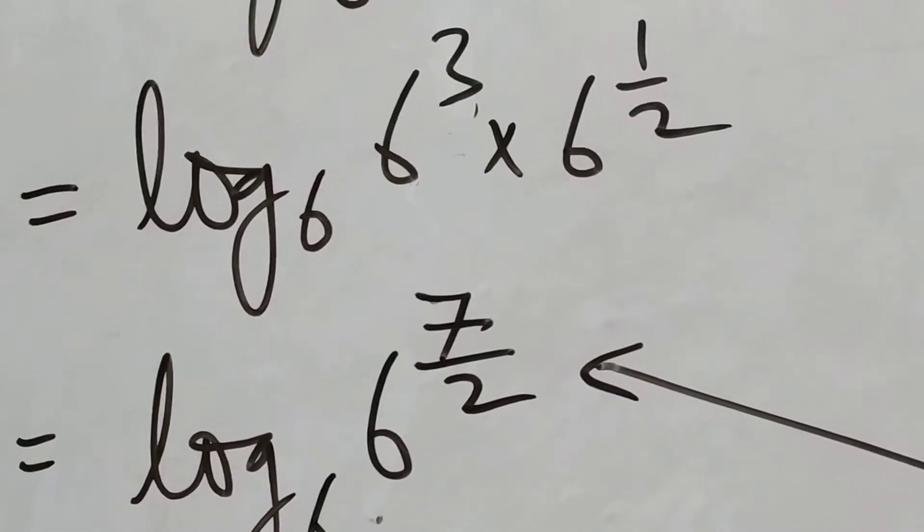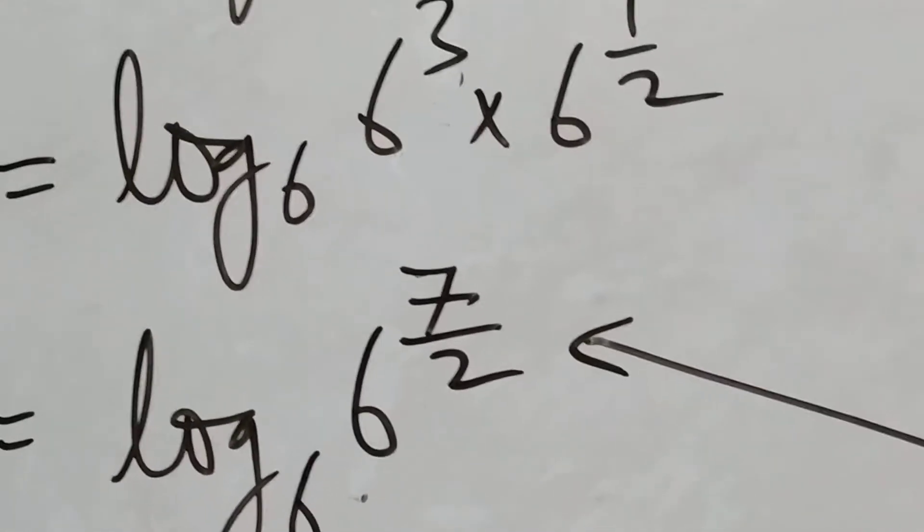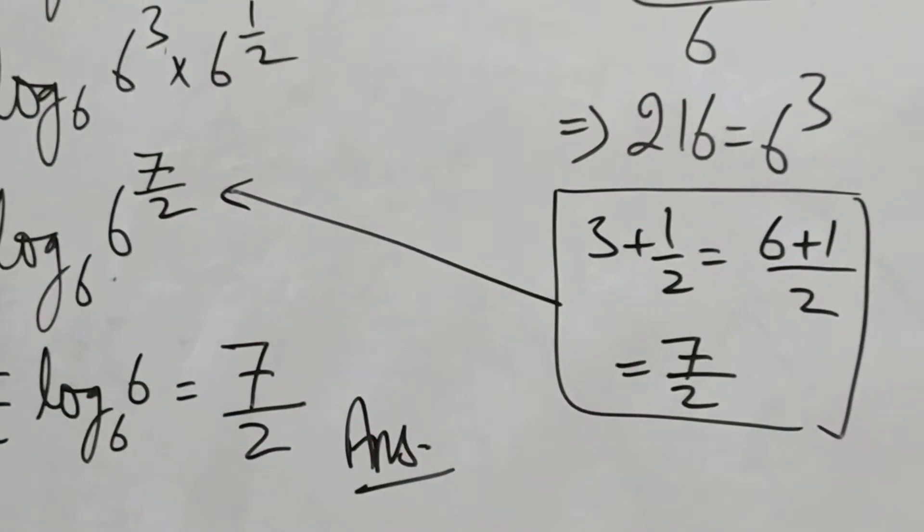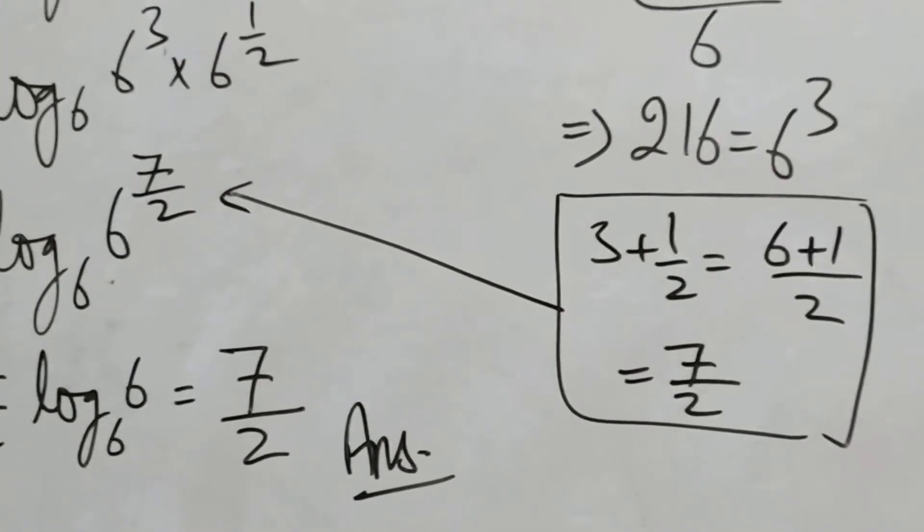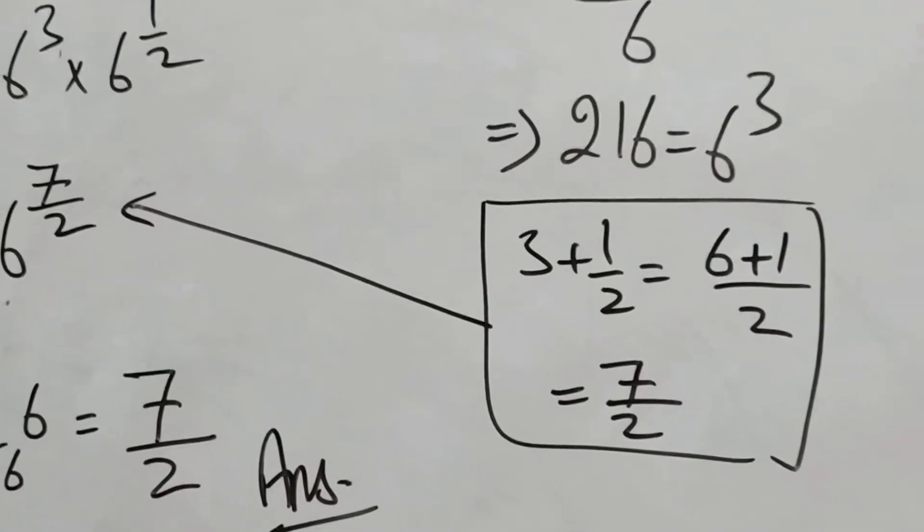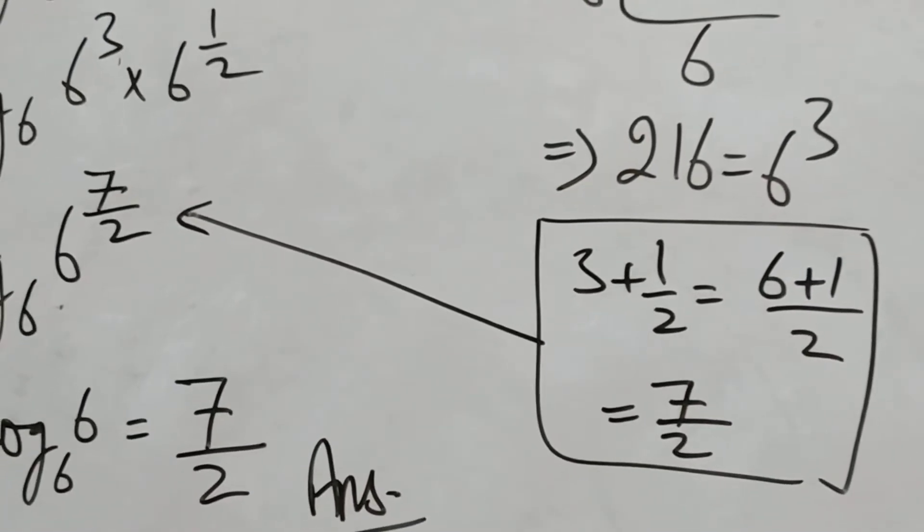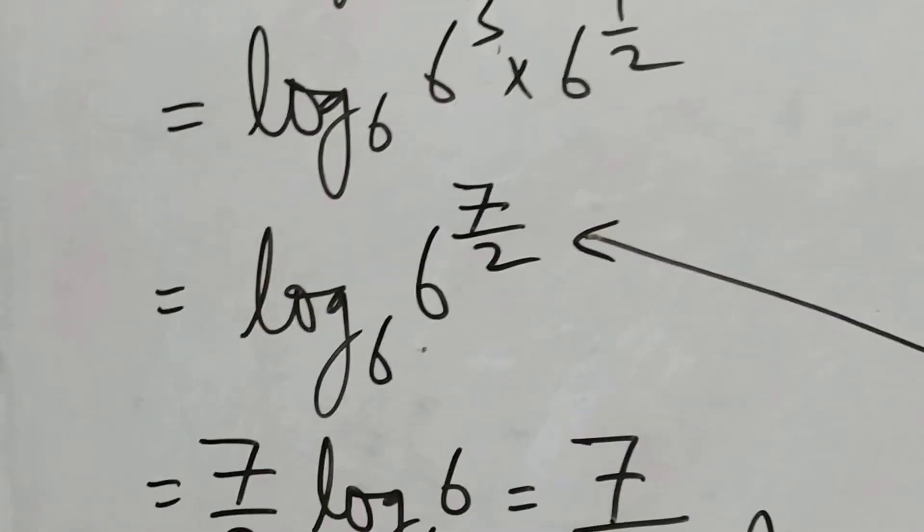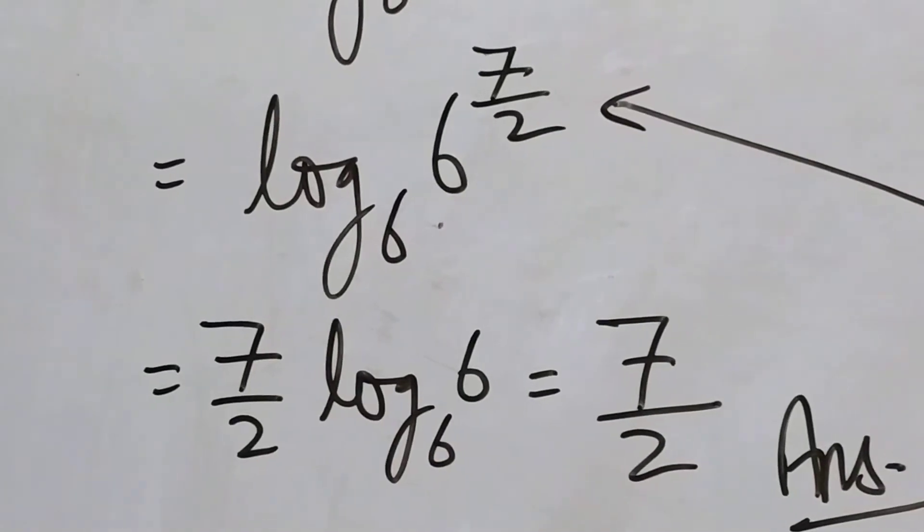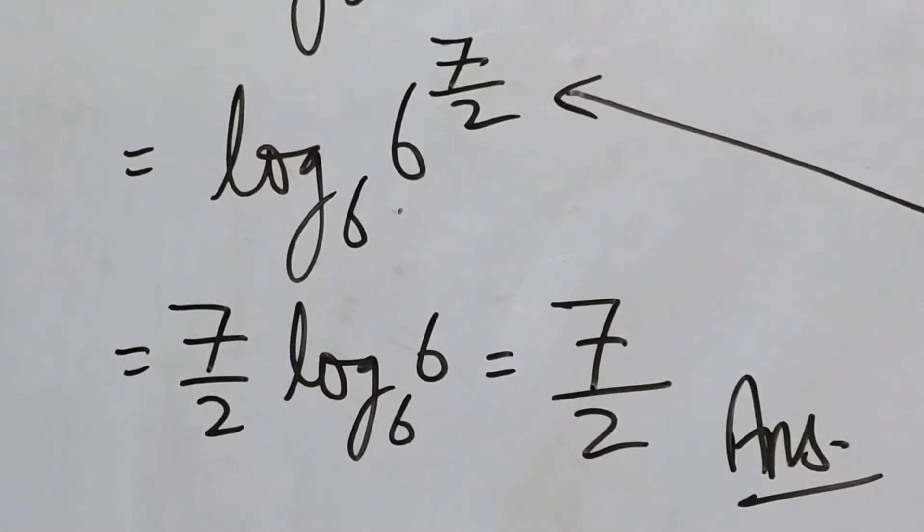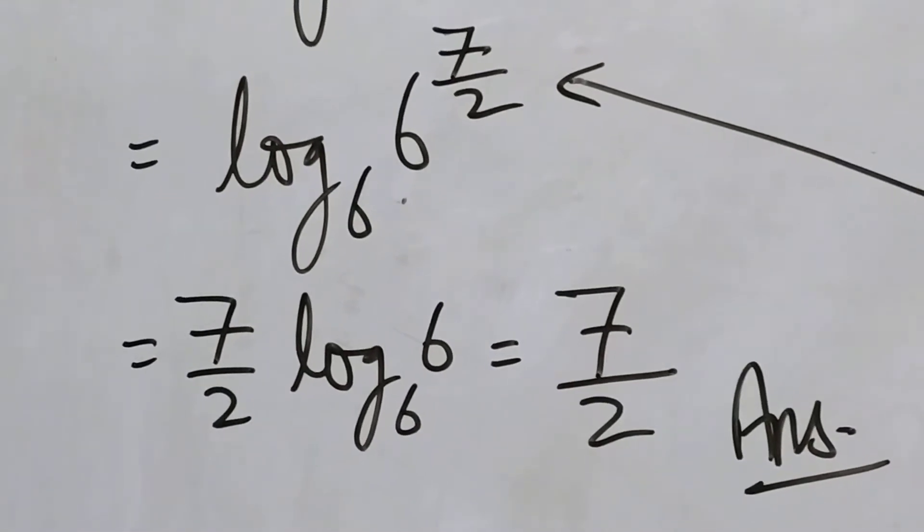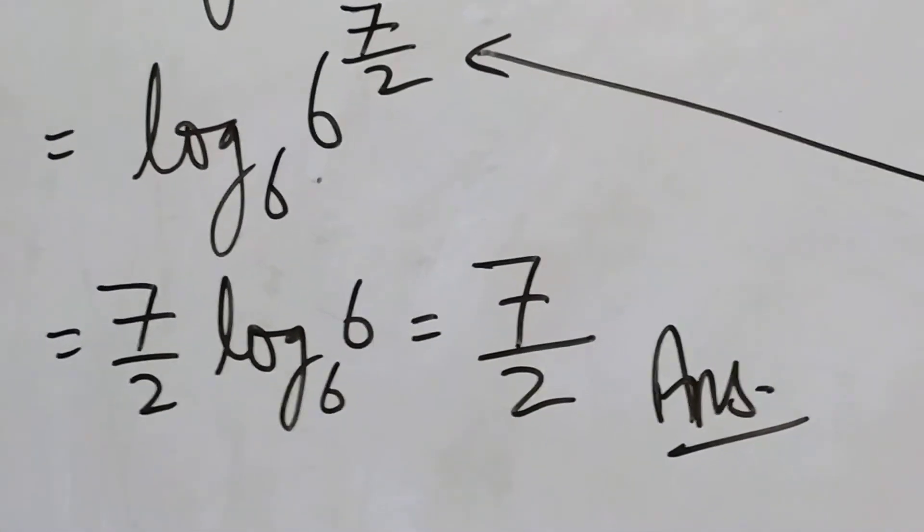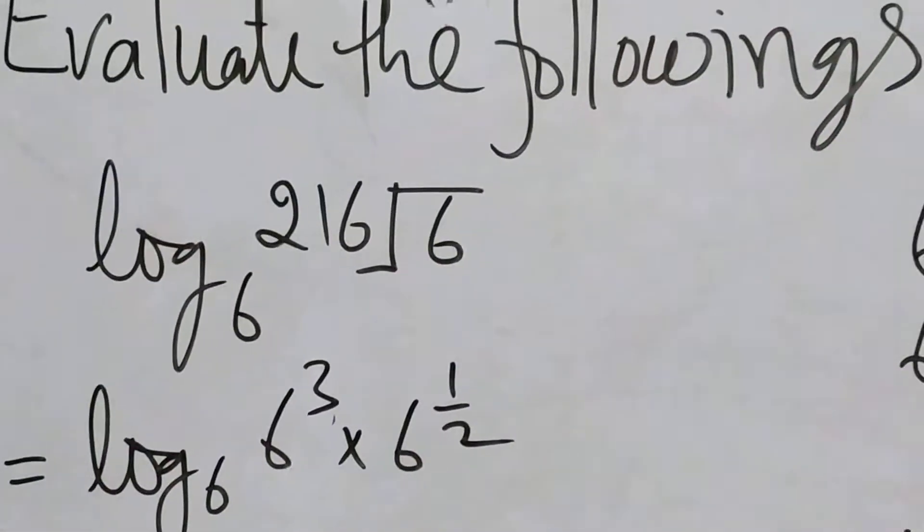Now further solve it. From where this 7 by 2 came? Just see here, just writing the powers. 7 by 2 log of 6 to the base 6. As we know that log of 6 to the base 6 is 1. So it's 7 by 2 times 1. That is 7 by 2. That is the answer.